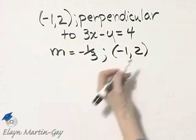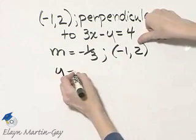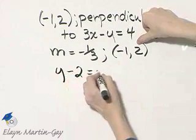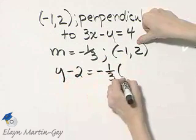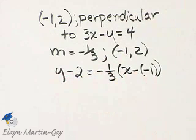Since I have slope and a point, I'll use the point-slope form. So that's y minus the y value is equal to negative 1/3 times x minus the x value.